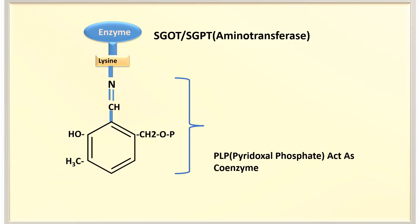Here you can see that this enzyme contains a lysine residue. As we know, this enzyme is a polymer of amino acids and it contains a lysine residue. The epsilon amino group of this lysine residue is linked with the coenzyme pyridoxal phosphate (PLP). This enzyme may be SGOT, SGPT, or aminotransferase.